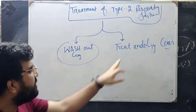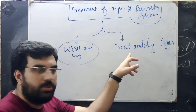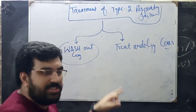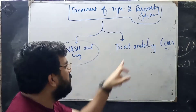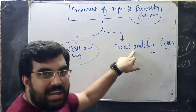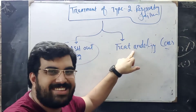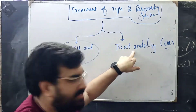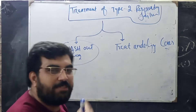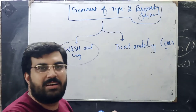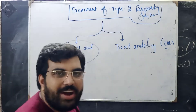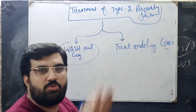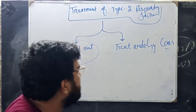The underlying causes were discussed in the previous video — the link will be in the description below. We have central causes and peripheral causes, and peripheral causes are further divided into inside the lung and outside the lung.